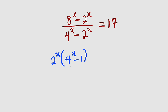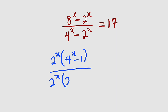We do the same thing for the denominator. We bring out 2 to the power of x. Inside, we have 4 to the power of x divided by 2 to the power of x, which is 2 to the power of x, minus 1. And to the right-hand side, we have 17.